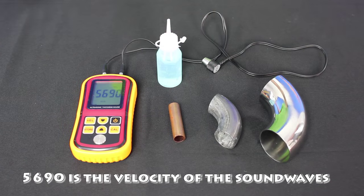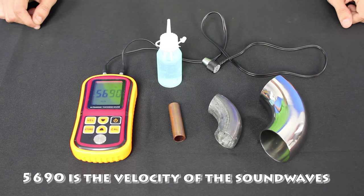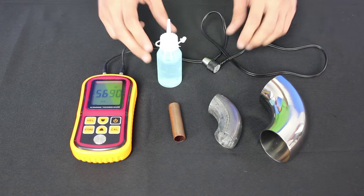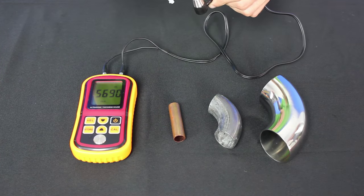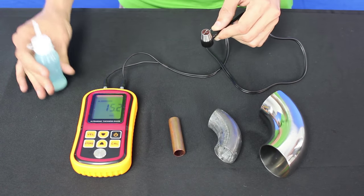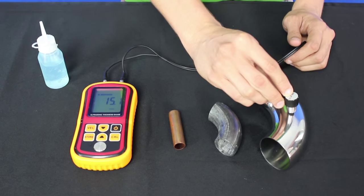There we go. Now that the thickness gauge has been calibrated, let's measure some metals. As I mentioned before, the first thing we want to do is add some gel to the sensor tip. And the next thing we want to do is start measuring metals.